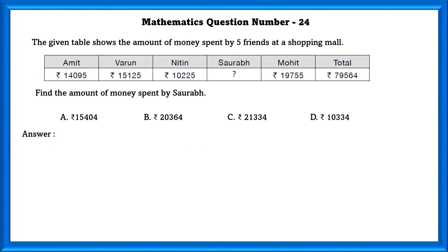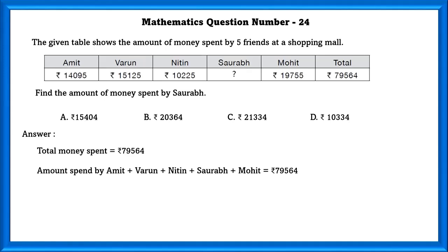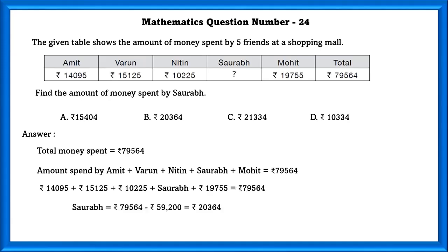Mathematics question number 24. The given table shows the amount of money spent by 5 friends at the shopping mall. Find the amount of money spent by Surab. Total money spent is equal to 79,564. Amount spent equals Amit plus Varun plus Nitin plus Surab plus Mohit, which is 79,564. So Surab equals the total amount subtracted by the amounts of Amit, Varun, Nitin, and Mohit, which is equal to 20,364.